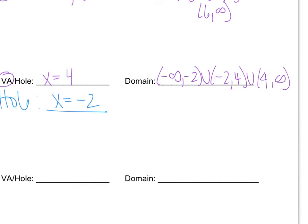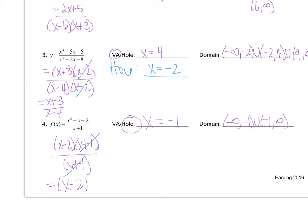Pause the video and try example four on your own. Number four was a little tricky — you had to factor the numerator and notice that x plus one canceled, making a hole in the graph at x equals negative one. After canceling, we only had x minus two left in the numerator. Notice there was no variable left in the denominator, so this graph did not have a VA. Please do not set the numerator equal to zero — only a variable in the denominator creates a VA. But the domain is still affected; we will have a break at negative one.